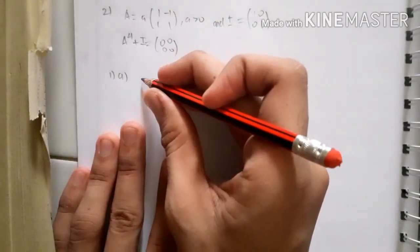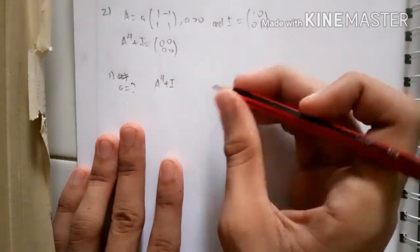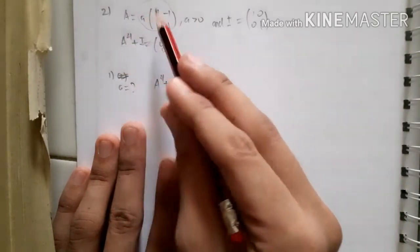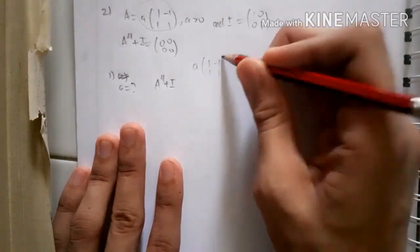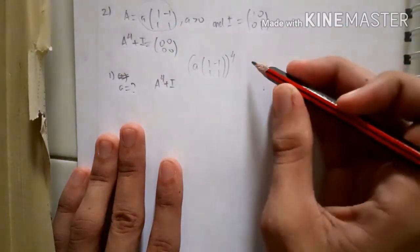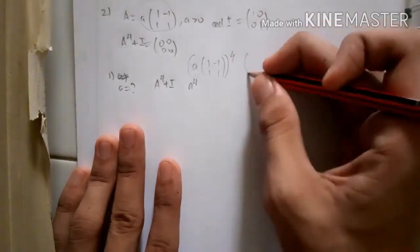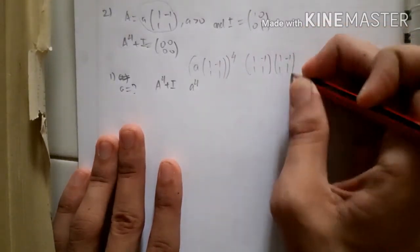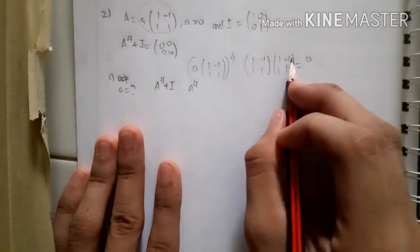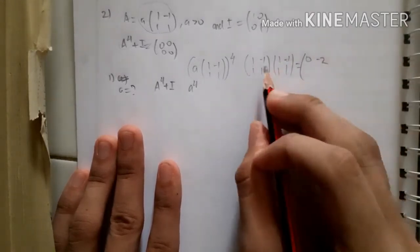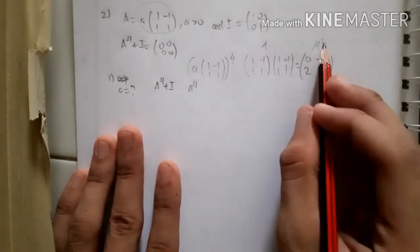A to the power of 4 means the matrix [[1,-1],[1,1]] multiplied 4 times. First, A squared: [[1,-1],[1,1]] times [[1,-1],[1,1]]. Computing: 1×1 + (-1)×1 = 0, 1×(-1)+(-1)×1 = -2, 1×1+1×1 = 2, 1×(-1)+1×1 = 0. So A squared is [[0,-2],[2,0]].